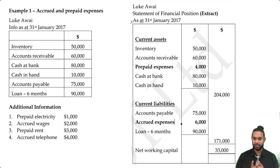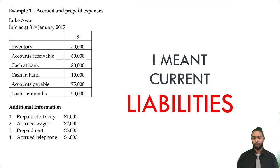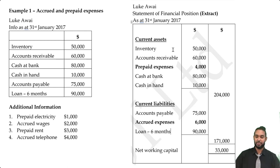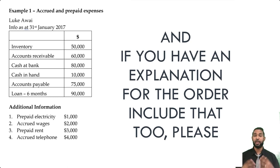Regarding the order of current liabilities: when I was in school, I was told there's no particular required order. I was chatting with my teacher and he mentioned it's more difficult to ascertain the actual liquidity or permanence of current liabilities compared to current assets. So it's more important to get your assets in the proper order than your liabilities. If your teacher gave you a specific order, stick to it — and feel free to share it in the comments so we can all learn together.